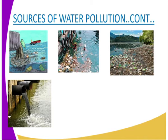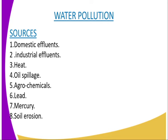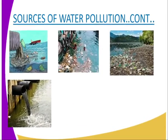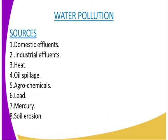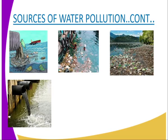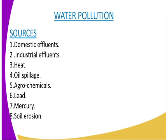Starting with domestic effluents: untreated sewage from urban centers gets discharged into rivers used for domestic water supplies. The second source is industrial effluents, which are directed into rivers, dams, marshes, and freshwater bodies. The third source is heat — industries discharge hot water directly into water bodies. We have also seen oil spillage, agrochemicals, lead, mercury, and soil erosion as sources of water pollution.